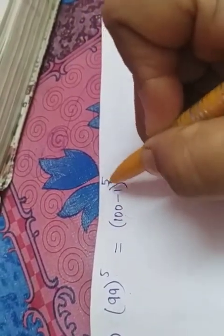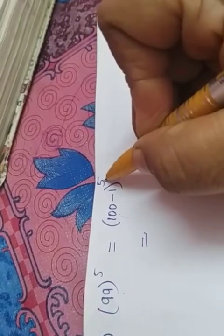Now, it is of the form A minus B the whole raised to N. Since it is raised to 5, there will be 6 terms.